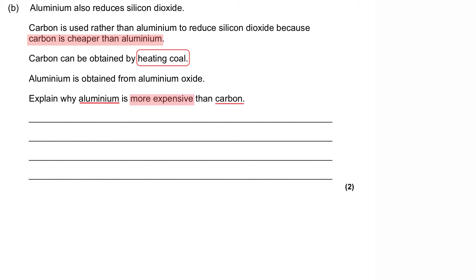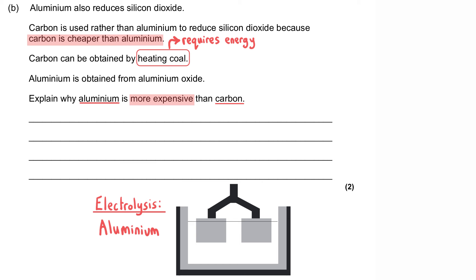So heating coal to produce carbon will require some energy. However, aluminium is obtained by electrolysis from aluminium oxide. And this is needed because aluminium is more reactive than carbon, so cannot be obtained by reduction from that method.